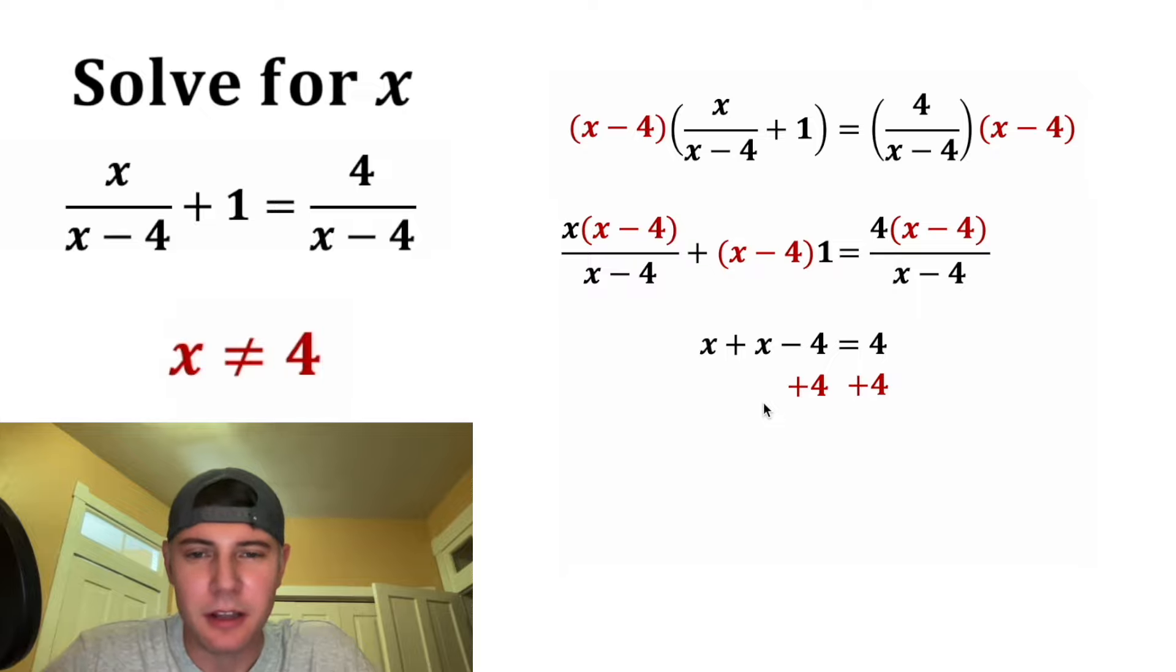We can add 4 to both sides. On the left-hand side, we'll be left with x plus x, which is 2x. And then on the right-hand side, 4 plus 4 is equal to 8. We can divide both sides by 2, and that'll give us x is equal to 4.